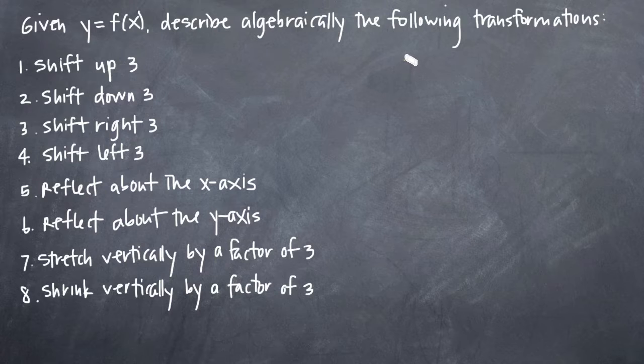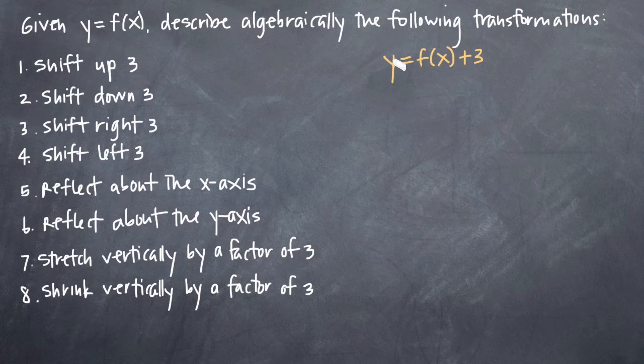So given y equals f of x, if we want to shift that graph, remember no matter what it is, but we want to shift it up 3 units, then our function would be y equals f of x plus 3. And that's easy to understand because no matter what we plug in for x here, the resulting y value would be 3 units more if we just add 3. So it would be a vertical shift up 3.